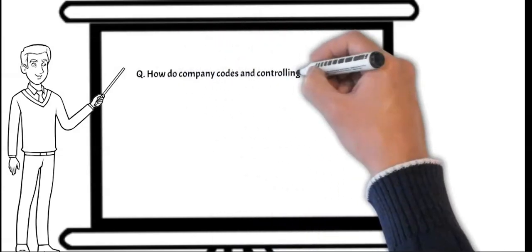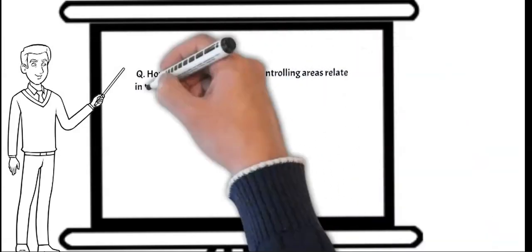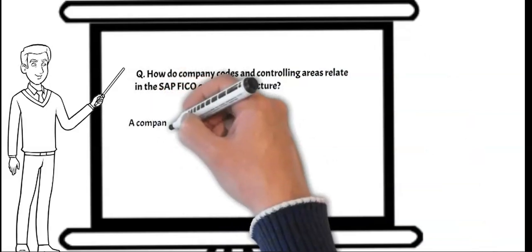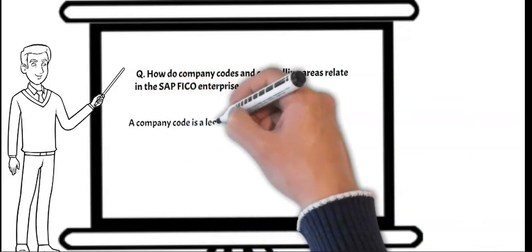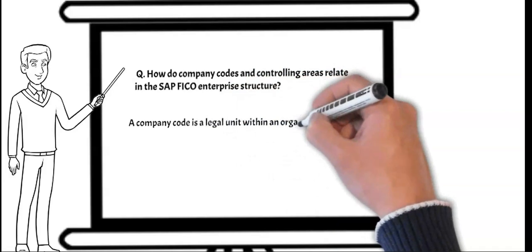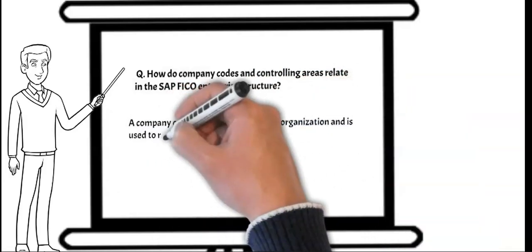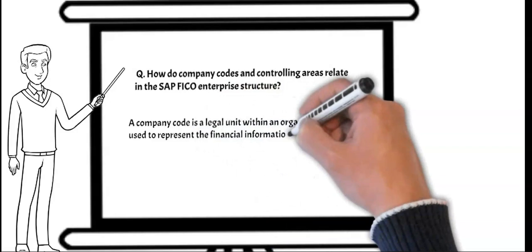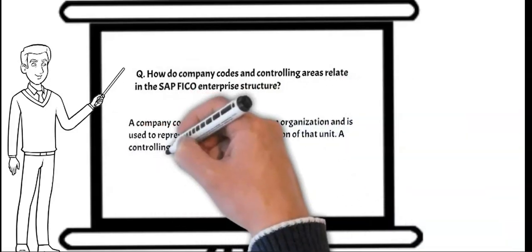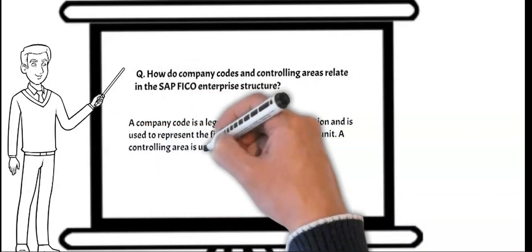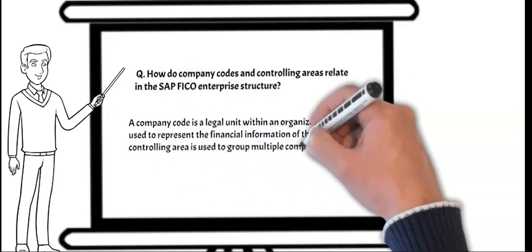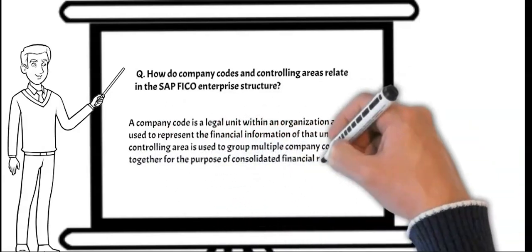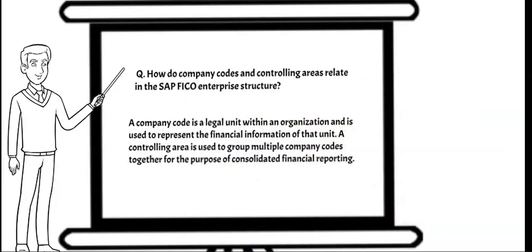Next question might be: how do company code and controlling area relate in the SAP FICO enterprise structure? A company code is a legal unit within an organization and is used to represent the financial information of that unit. A controlling area is used to group multiple company codes together for the purpose of consolidated financial reporting.